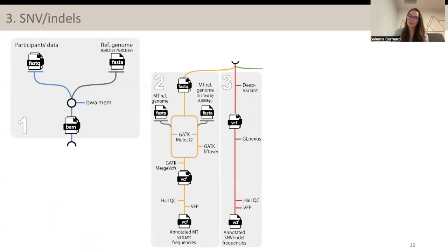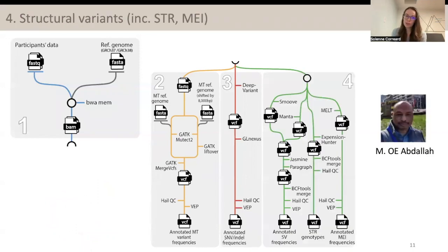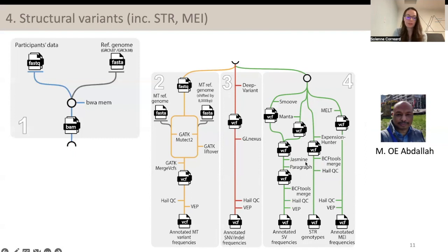The third subworkflow is the single nucleotide variant subworkflow. It is the most straightforward one. For variant calling, we decided to use DeepVariant, and we are using GLnexus for the joint calling. For the fourth subworkflow, the structural variant subworkflow, it was mostly developed by Mohamed Abdallah, a postdoc within the Wasserman lab. It was decided to use SMOOVE and Manta for structural variant callers. Jasmine is used to merge the variants, and Paragraph is used to genotype the structural variants within the individual data. Then the information is merged with BCFtools. For short tandem repeats, we are using ExpansionHunter, and for mobile element insertions, we are using MELT.